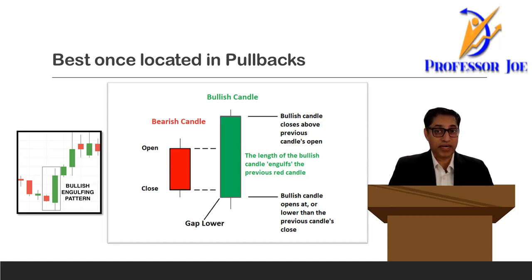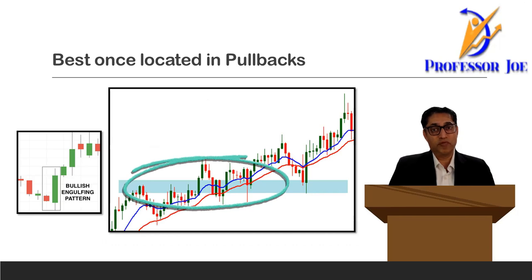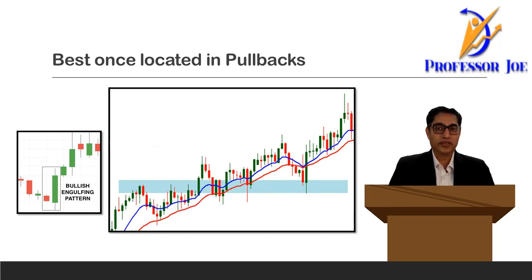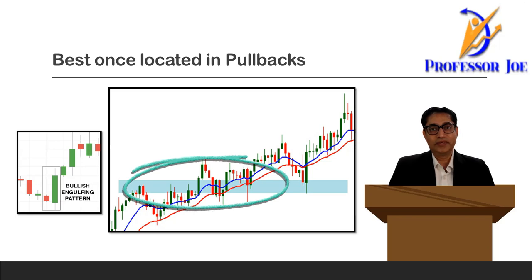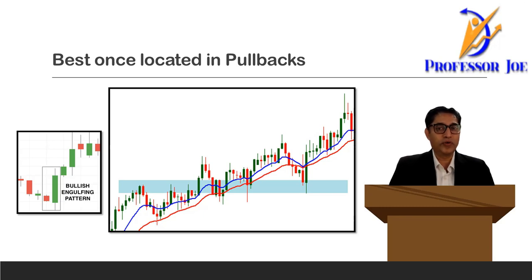A bullish engulfing candlestick pattern can be identified at two major locations on the chart. The first one is at a breakout of a resistance zone when it then becomes a support zone. You can see on this chart how the price broke the previous resistance, went up, retraced back, and made a new support area at the previous resistance. In that zone, when you get a bullish engulfing candle, it is a wonderful entry point to enter a trade.